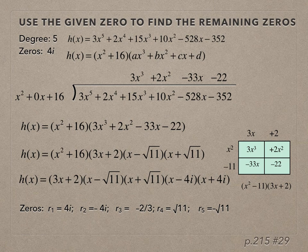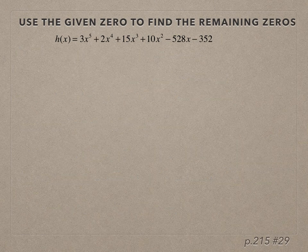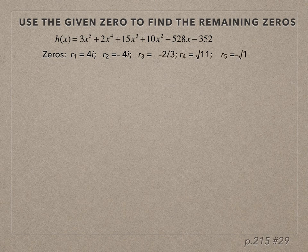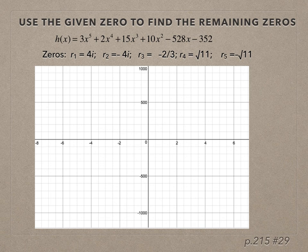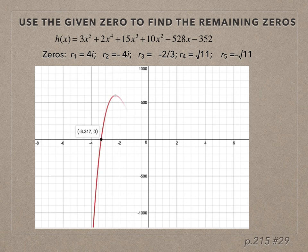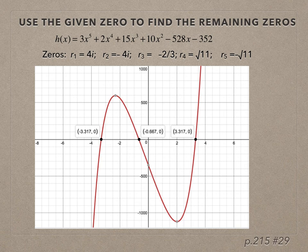I love to type my function into a graphing utility like Desmos to check that my answers make sense. After finding an appropriate window, I notice there is one rational zero at -2/3, two irrational real zeros at ±√11, and the other two zeros don't intersect the x-axis because they are complex.